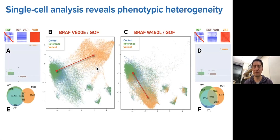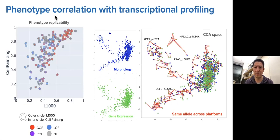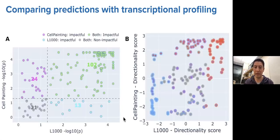We can also do single-cell analysis because images reveal cellular heterogeneity. For the gene BRAF with two mutations in our dataset — V600E and W450L — we see different mechanisms of action: one moved to a different region of the feature space. Both have detectable differences from the reference, but they are doing different things, which informs potential future treatments. We also analyzed the correlation of our phenotypic readouts from images with transcriptional profiling, finding they are very well correlated and consistent with gene expression measurements.